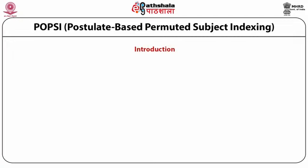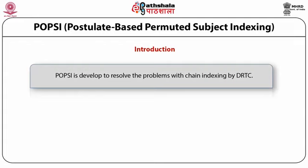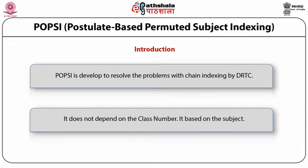POPSI — Postulate with Permitted Subject Indexing. Introduction. Chain procedure devised by Ranganathan has been a significant landmark in subject indexing both in India and abroad. Its major weakness has been its dependence on a scheme of classification. If the class number of a document is constructed on the basis of a structurally defective scheme, chain procedure cannot index the document properly. It also suffers from the problem of disappearing chain. The information scientists of DRTC developed an indexing system free from these defects, called POPSI. It does not depend on the class number but is based on Ranganathan's postulates and principles of general theory of classification, and hence is considered an improved version of chain indexing.